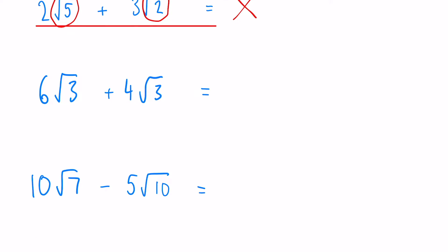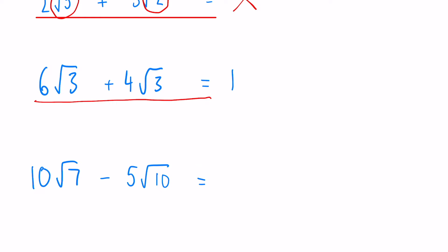Okay, 6 root 3 plus 4 root 3. Now this one's fairly straightforward. We can see that the roots are the same, so all we do is add the numbers at the front. So 6 plus 4 we get 10 root 3.